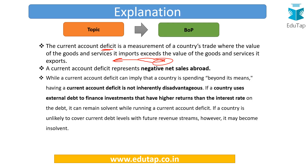Countries deal with current account deficit by devaluing their currency, which causes exports to rise. They may also set import quota tariffs — after a certain number of units, no further imports are allowed. When companies cannot import, they must buy from the domestic market, meaning less money flows outside the country, which narrows the current account deficit.